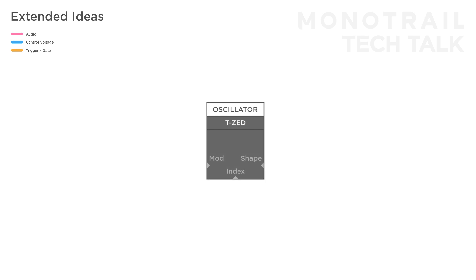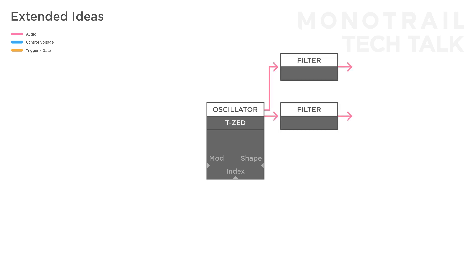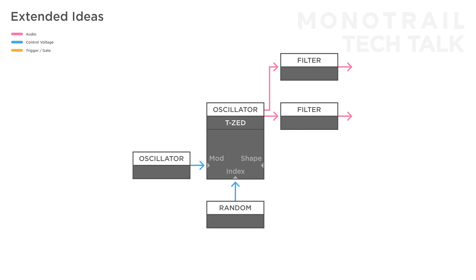Having multiple waveform outputs gives you the possibility to easily make stereo patches — this sounds great with phase modulation. For example, take the square output to one filter and the saw output to another. Use an oscillator for phase modulation, a random voltage to the modulation amount, and something like another random voltage to modulate both filters for some extra movement.